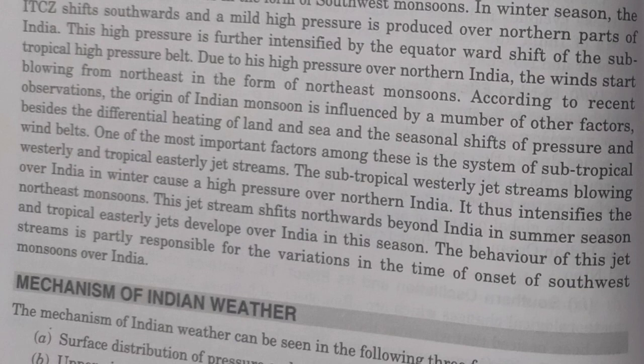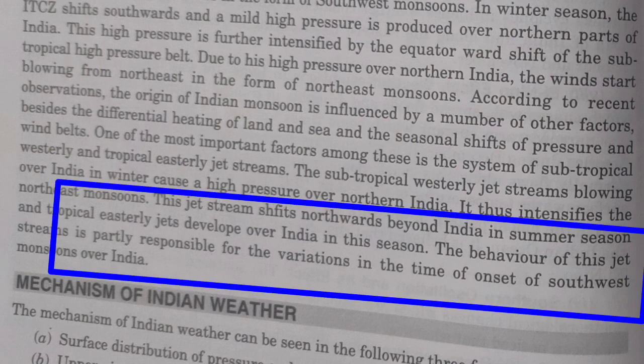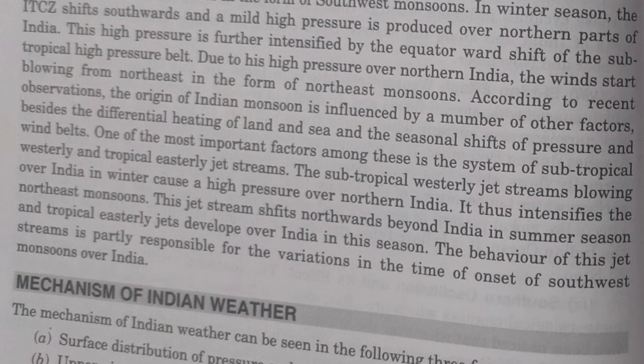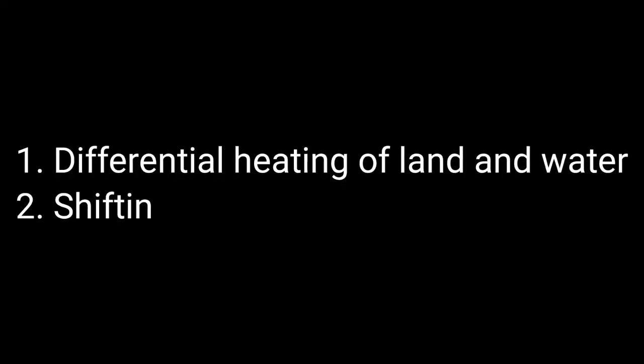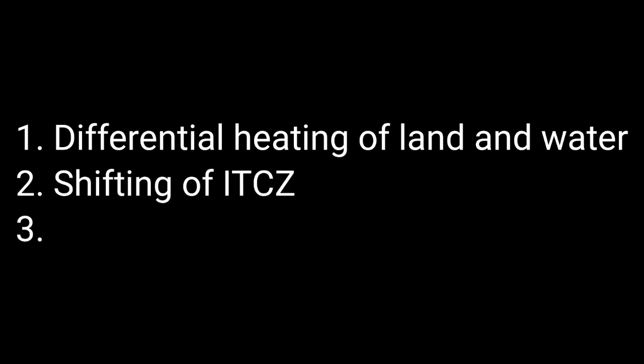The behavior of these jet streams is also very much responsible for the variation in the timing of the onset of monsoon. So students, we have seen three different theories: differential heating of land and water, shifting of ITCZ, and the occurrence of jet streams. All three theories play a very important role in the mechanism of the monsoon season in India.